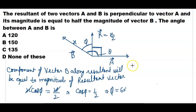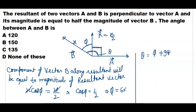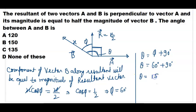We need to calculate angle theta. Angle theta is equal to phi plus 90. The value of phi we calculated is 60 degrees, so theta equals 60 plus 90, which gives theta equal to 150 degrees.